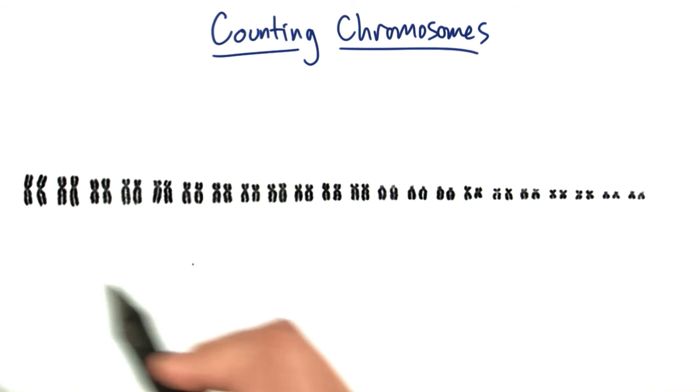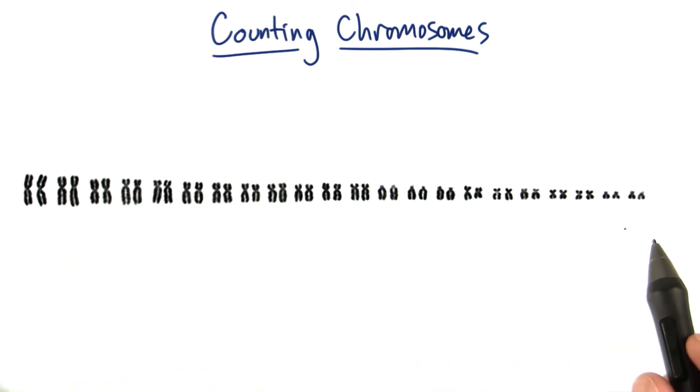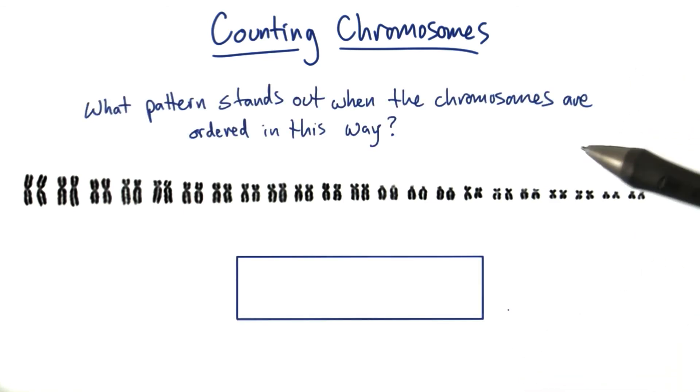So I want you to pay really close attention to all the chromosomes that you see here and see if there's any kind of pattern that stands out to you. What I want you to tell me is if you see any pattern that stands out in all of these chromosomes when they're ordered in this fashion from biggest to smallest. Try to think of an answer, one or two word response if possible, and put it in the text box here.